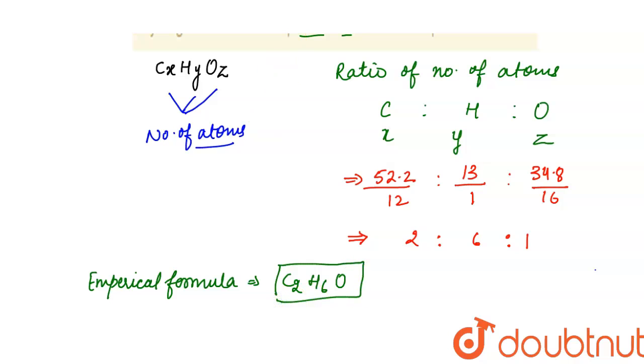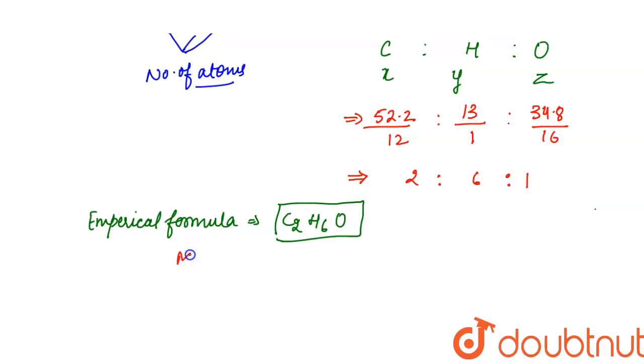Also we can calculate empirical mass. Here carbon 2 atoms, so molar mass of carbon is 12, 2 atoms multiplied by 2. Hydrogen 1, 6 atoms multiplied by 6.